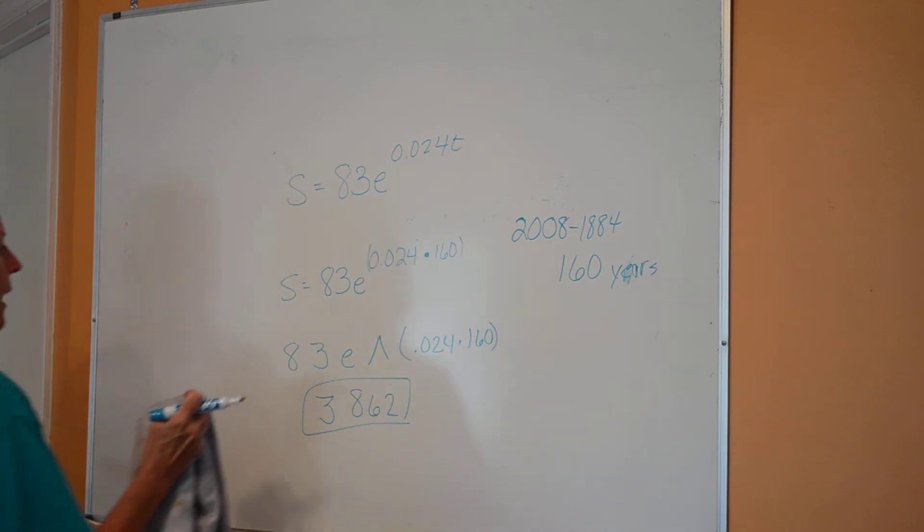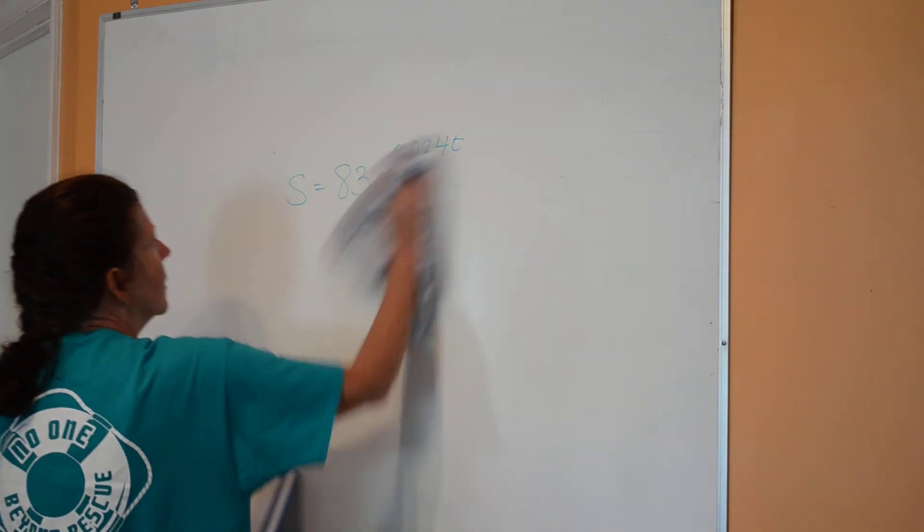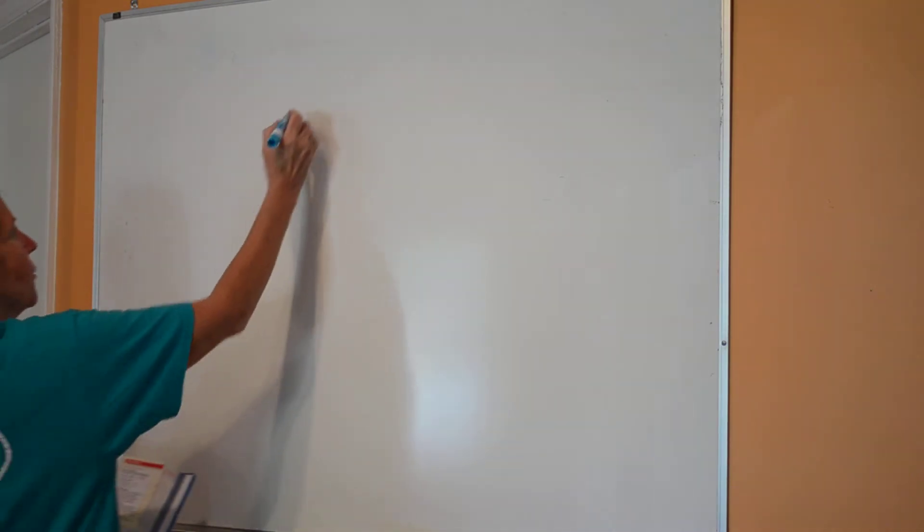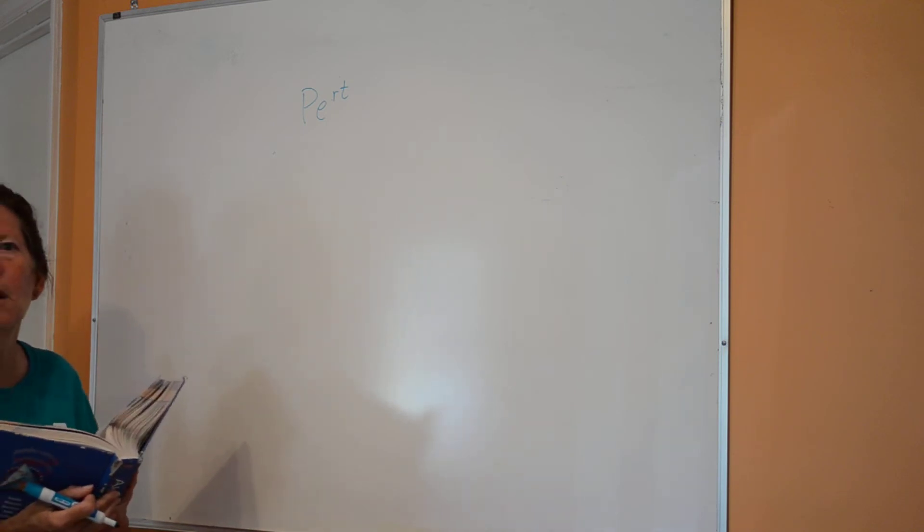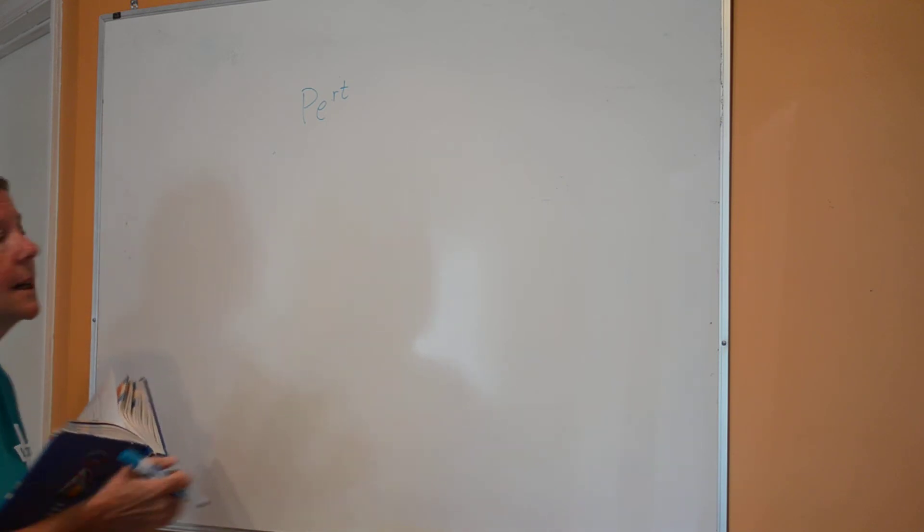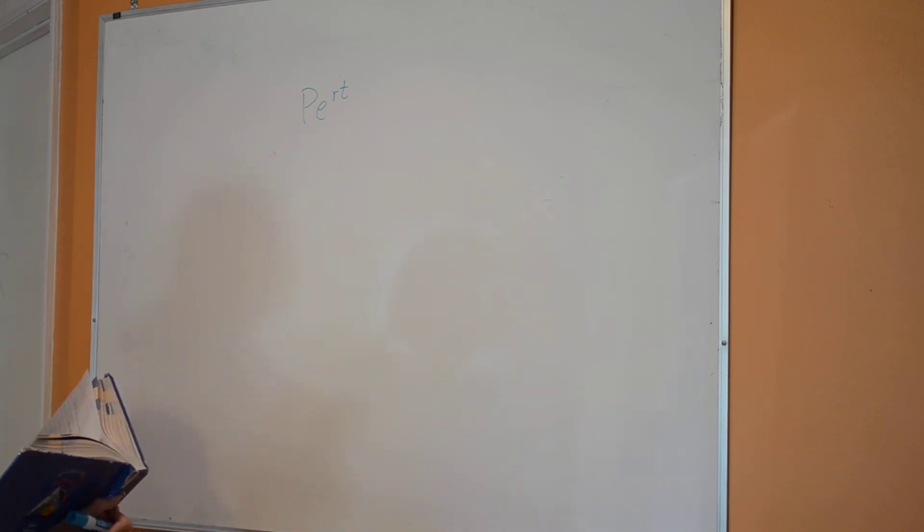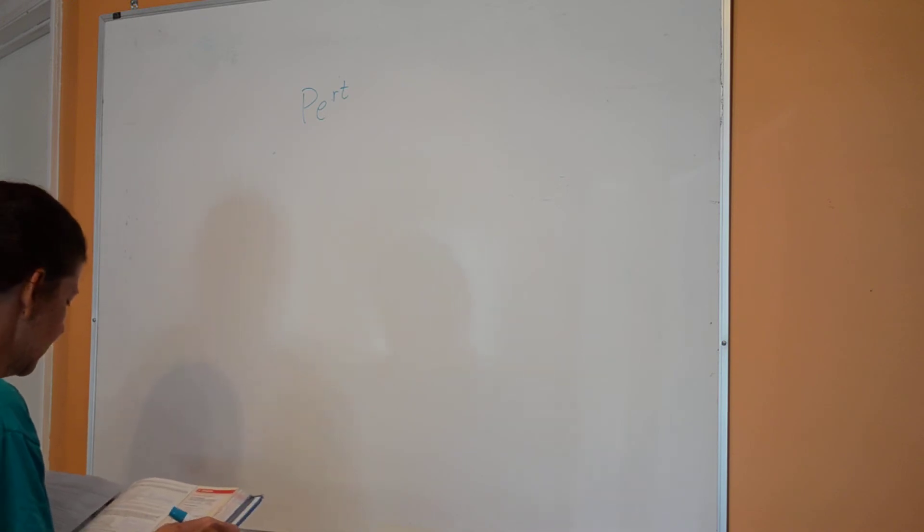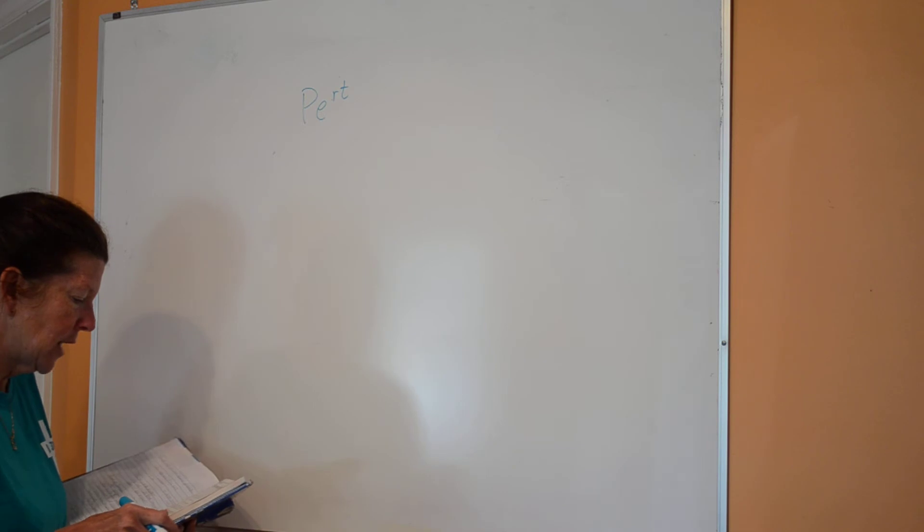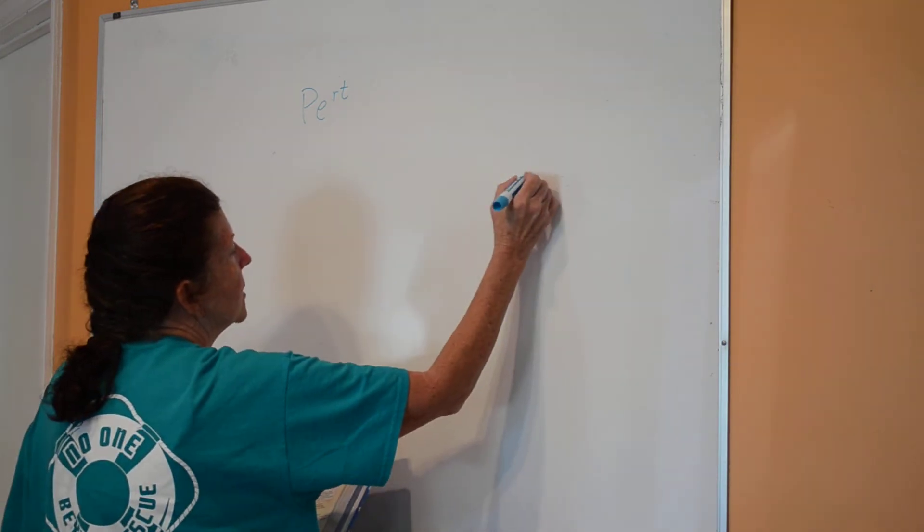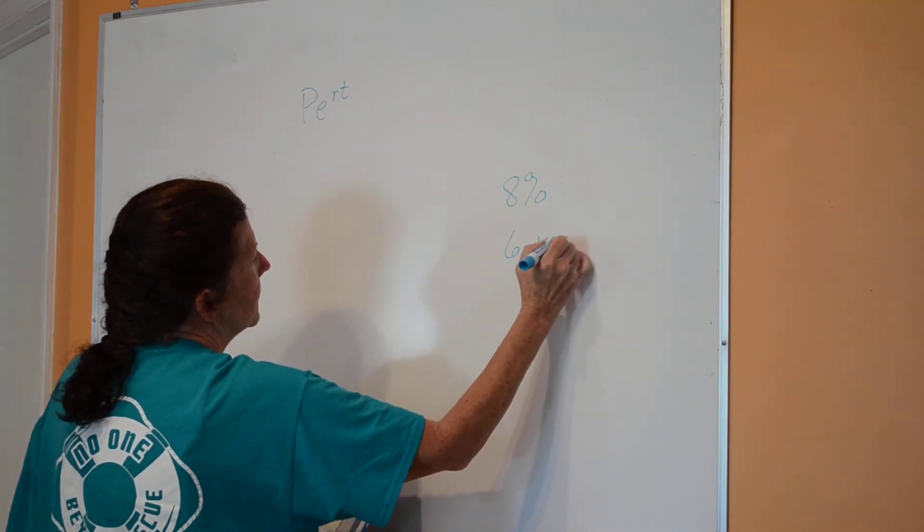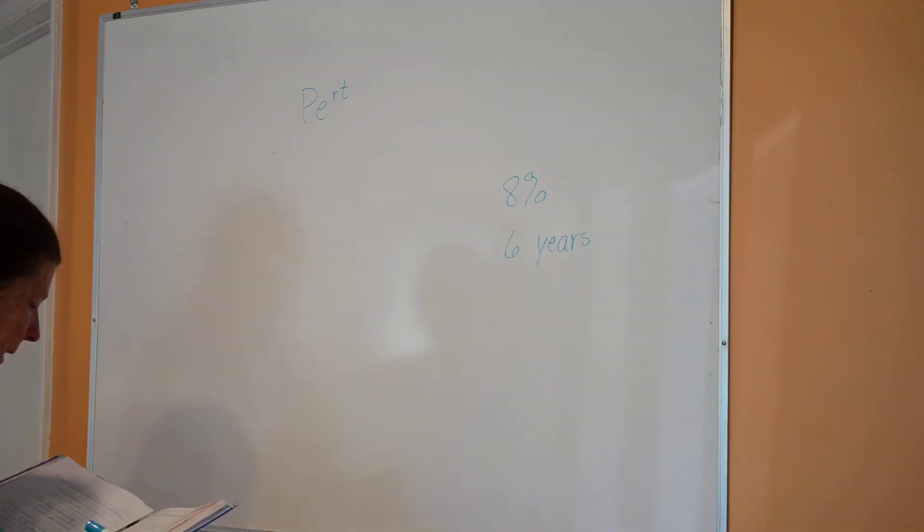Then look at example four on that same page in your book. This is using the PERT formula. This is in finances. The PERT formula basically allows you to figure out how much you can make by investing P amount of money for a certain rate and a certain time with continuous compounded interest. So it says Mr. and Mrs. Franco are planning to take a cruise for their 25th wedding anniversary.